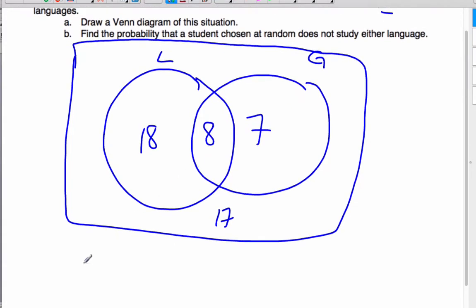And B says, find the probability that a student chosen at random does not study either language. That means they do not study Latin. And they do not study Greek. That's this region here where they intersect. That's 17 out of 50. And in probability, you can leave it as fractions or decimals or percentage. Either one is fine.